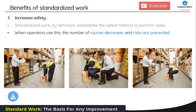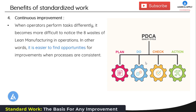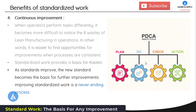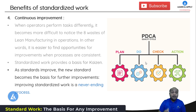The fourth important benefit of standardized work is continuous improvement. When operators perform tasks differently there is no standardization, and it becomes much more difficult to notice the eight wastes of lean manufacturing in operations. It is easier to find opportunities for improvement when processes are consistent. Standardized work provides a basis for kaizen — without it, we cannot think about any kind of improvement, and any improvement done will not be sustainable. As standards improve, the new standards become the basis for further improvement. Improving standardized work is a never-ending process: we need to maintain current improvements and seek new ones.